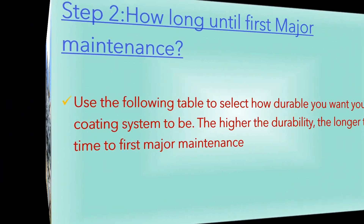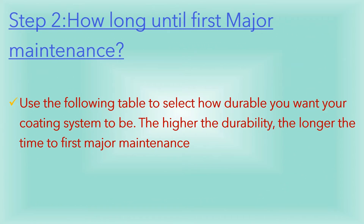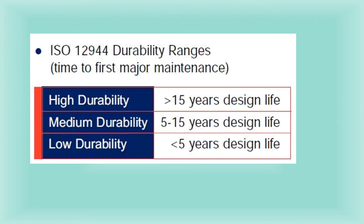Step 2: decide how long until first major maintenance. Use the following table to select how durable you want your coating system to be. The higher the durability, the longer the time to first major maintenance. High, medium, and low durability options are available. Remember, when selecting the most cost-effective system for your project, durability does not equate to a guaranteed time period — it relates to the performance duration of the coating system before first major maintenance. Regular minor maintenance should always be anticipated in order to achieve the required life to first major maintenance. C5M marine environments present the toughest conditions and require more durable systems.